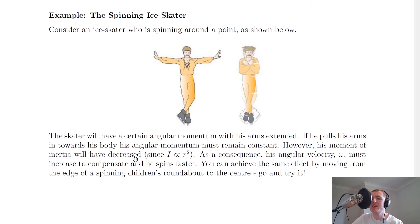However, his moment of inertia will have decreased since I is proportional to r squared. Because remember, r is the distance of the mass distribution from the axis of rotation. So if we decrease r by bringing the arms in towards the body, then you have more mass now located around the axis of rotation, and it means that your moment of inertia has decreased.